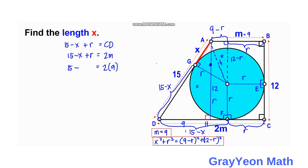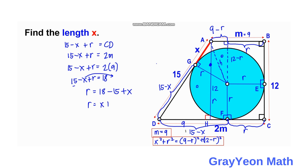From 15 − X + R = 18, we solve: R = 18 − 15 + X = X + 3. Or equivalently, X = R − 3.